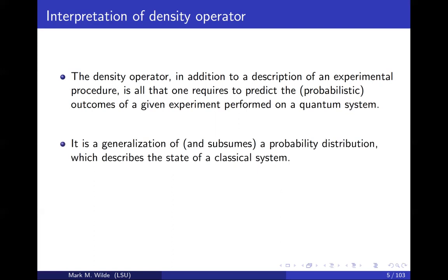And indeed, a density operator generalizes a probability distribution. So if you studied probability theory before, then you've learned about, like, what is a classical bit? That can be a coin that has some probability for being heads and some probability for being tails. And so that's a probability distribution. It's just described by two numbers. And a density operator generalizes that because you have more numbers that can describe the state.